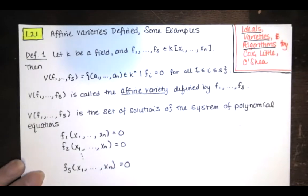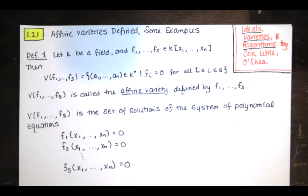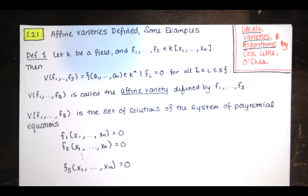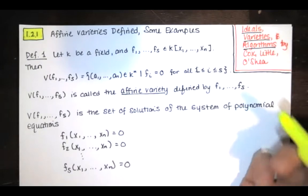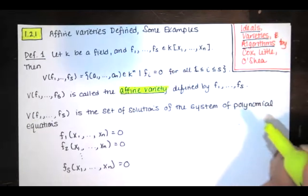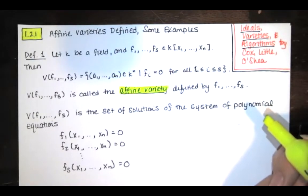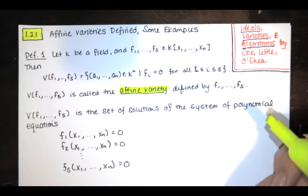You've set polynomials equal to 0 before and solved for x and y in Calculus 3 when optimizing polynomial functions of two variables. When these were linear functions in x, y, and z and you were solving those systems of equations, you were finding an affine variety. Many functions and relations we're familiar with — conics, polynomials, rational functions, and the quadric surfaces from Calculus 3 — are all affine varieties. So even though this looks abstract, it's something you're very familiar with. We're just giving it a new name.